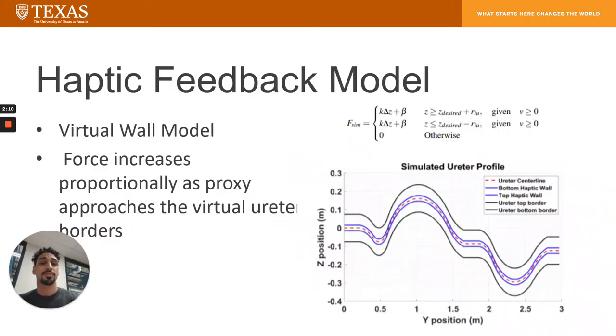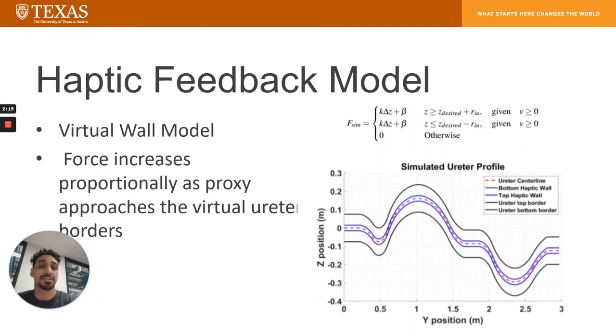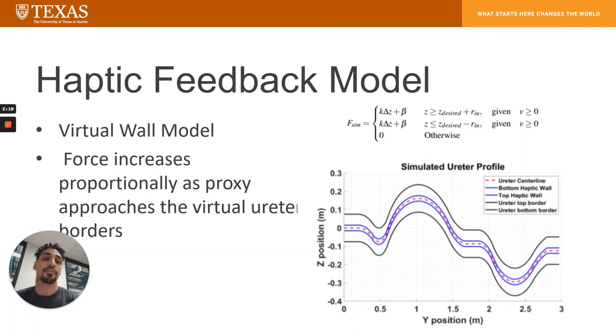As a proof of concept, the force rendering algorithm is approximated as a haptic wall, where the force increases proportionally to the distance of intersection with the tip proxy into the virtual ureter wall for velocities that are greater than zero.